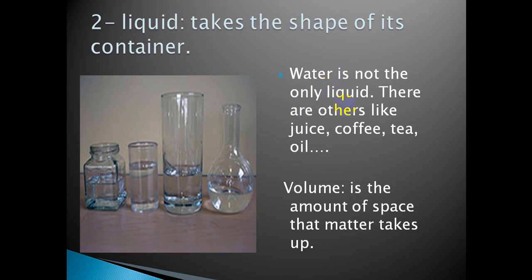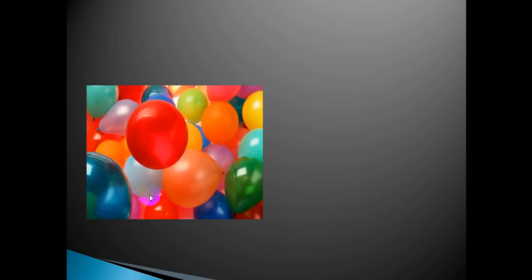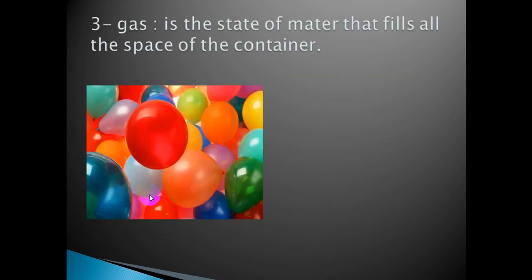We can find the volume of a liquid. Volume means the amount of space that matter takes up — how much space the water takes here is its volume. But the amount of matter inside an object is its mass. There is a difference between mass and volume: mass means the amount of matter inside an object, while volume means the amount of space it takes up. The third state of matter is gas.